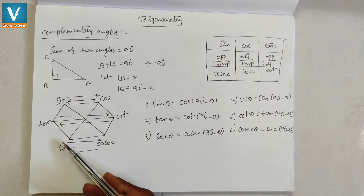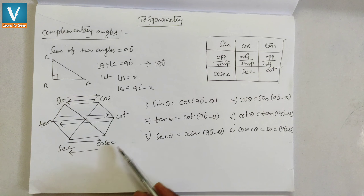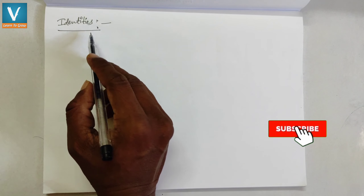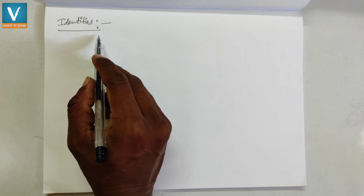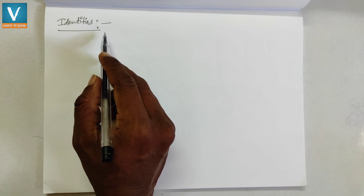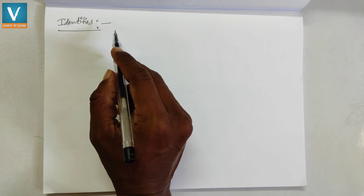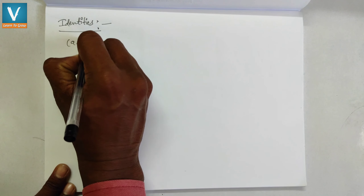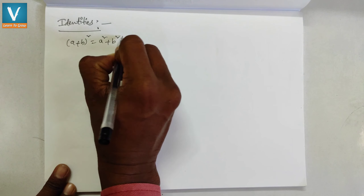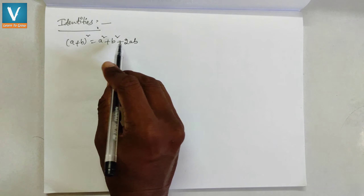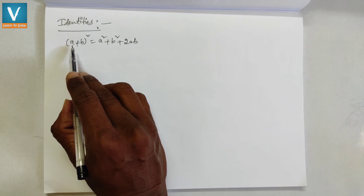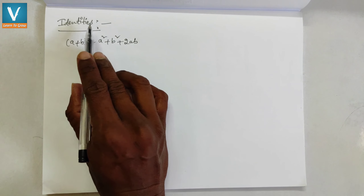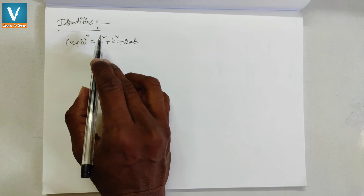The next topic is trigonometric identities. An identity is a mathematical equation that is true for all values of the variables. For example, (a + b)² = a² + b² + 2ab is an identity — whatever values you substitute for a and b, the LHS and RHS are always equal. Similarly, we have trigonometric identities.